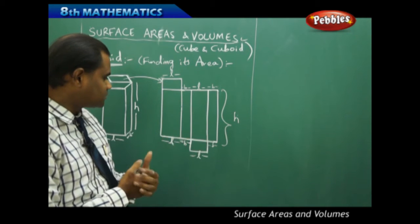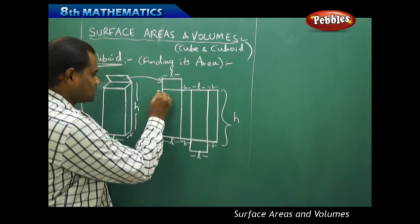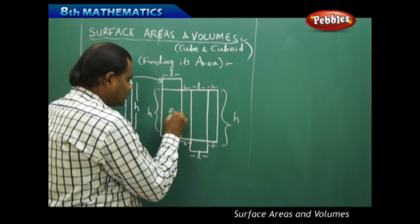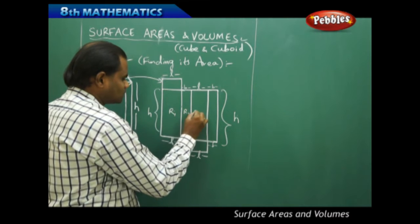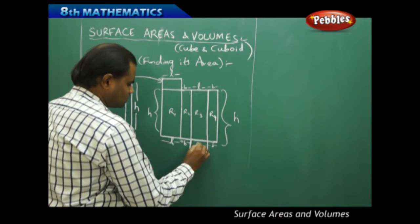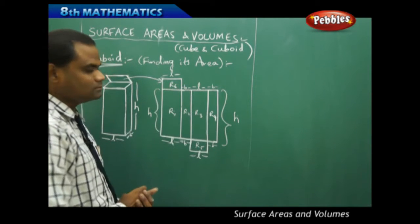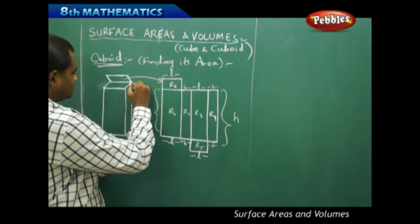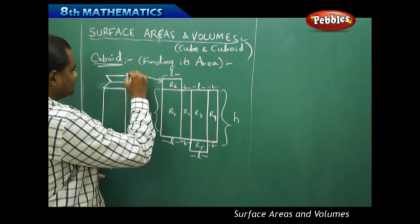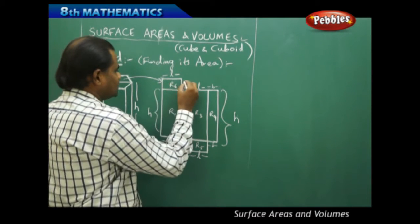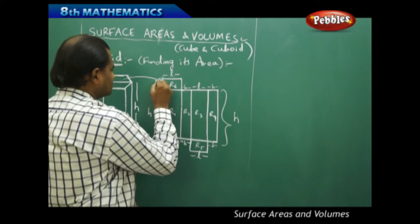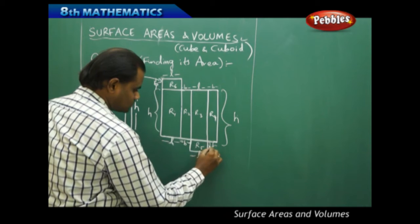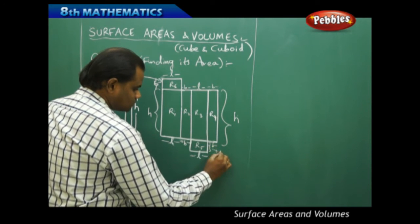With H confirmed on each side, I now have six regions labeled R1, R2, R3, R4, R5, and R6. The top and bottom faces have dimensions L and B. Each side strip carries dimension B on its width. So all six regions have been assigned their dimensions based on the original cuboid measurements of L, B, and H.